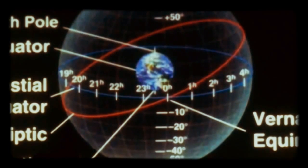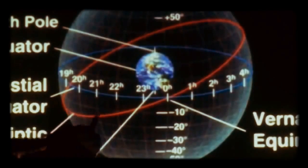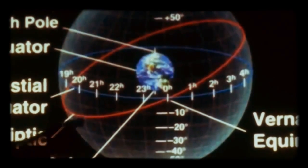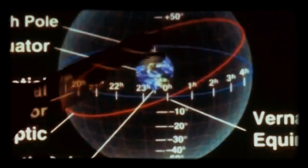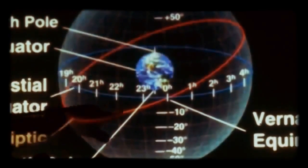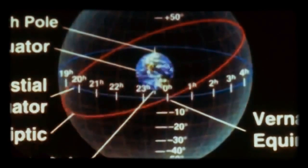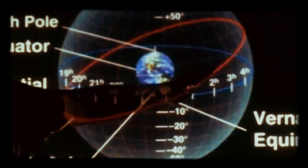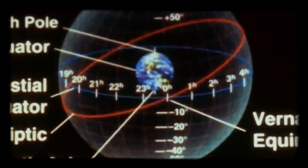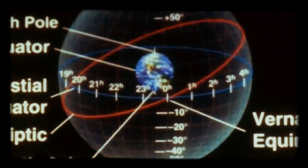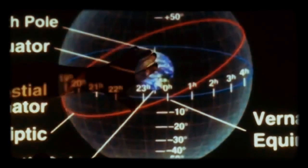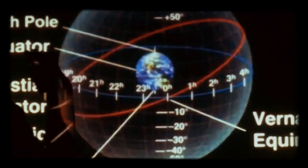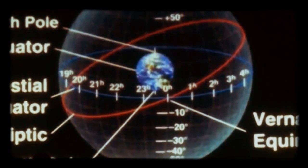The diagram also shows the ecliptic, which tracks the general path of the Sun, the Moon, and the planets. Notice how the ecliptic is at an angle to the Earth's equator — actually it would be more accurate to draw the ecliptic straight and the Earth tilted, but we won't worry about that tonight.